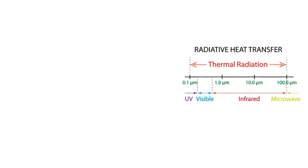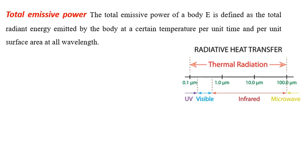Now we will discuss what is total emissive power. All surfaces at a temperature above absolute zero emit energy in all directions over a wide range of wavelengths. At a given temperature, the total amount of heat energy emitted by a surface in all directions over the entire wavelength per unit area per unit time is called emissive power. The emissive power depends on the characteristics and temperature of the surface.